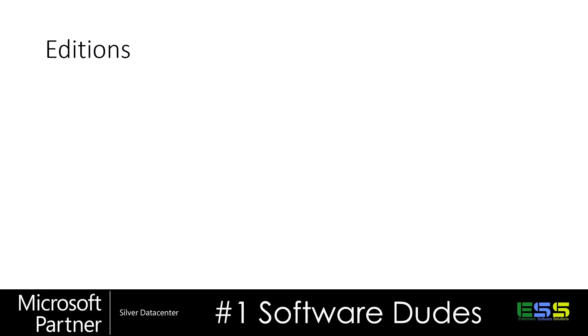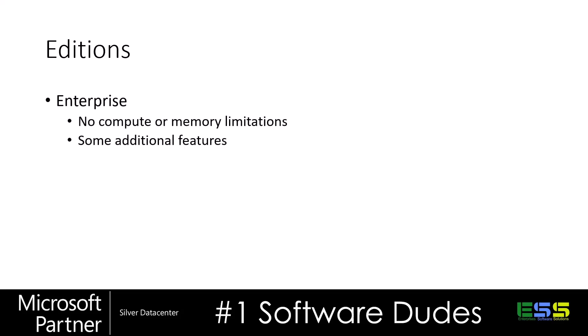We're first going to take a look at the editions of SQL Server. At the top, the best and most expensive is the Enterprise version of SQL Server. This includes all the features with no compute or memory limitations — the only limitations are the hardware and operating system you're running on. One step down, you have SQL Server Standard, which is limited to 24 cores, 120 gigs of memory, and is lacking some enterprise features.